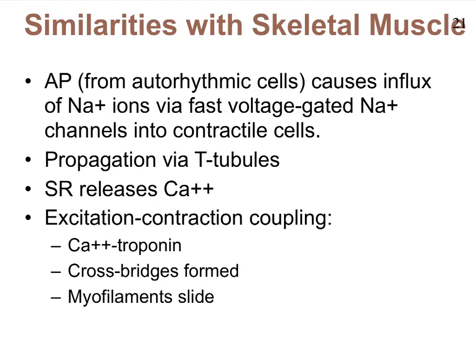We're going to focus on just the contractile muscle cells. They act very similarly to skeletal muscle fibers. Skeletal muscle fibers require an action potential from the somatic nervous system with the help of acetylcholine binding. The action potential for cardiac muscle cells, however, arrives from the auto-rhythmic cells.